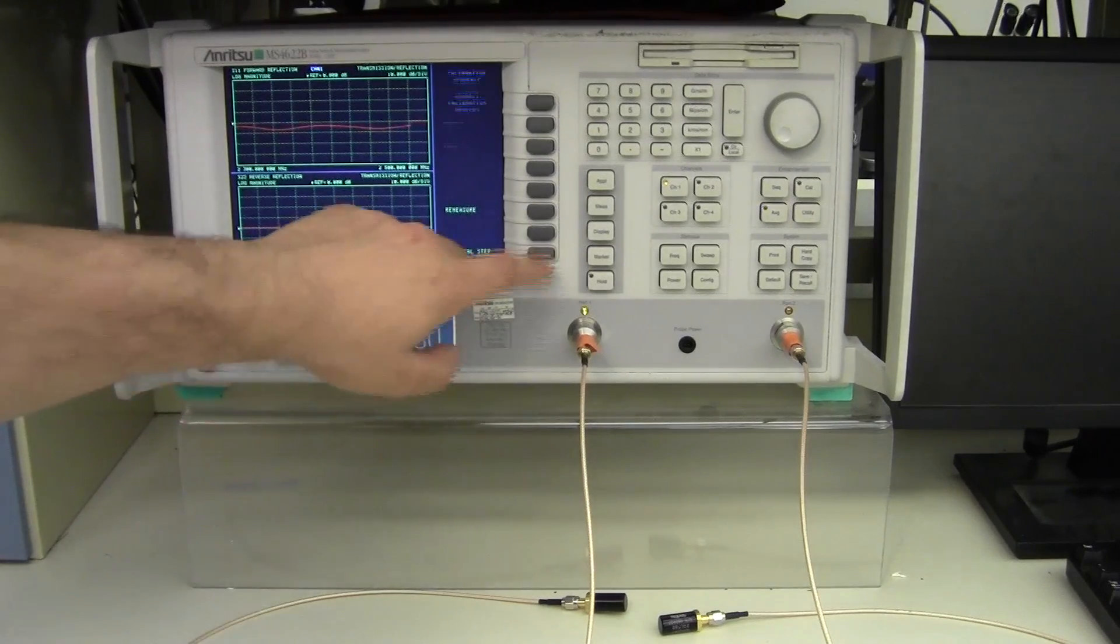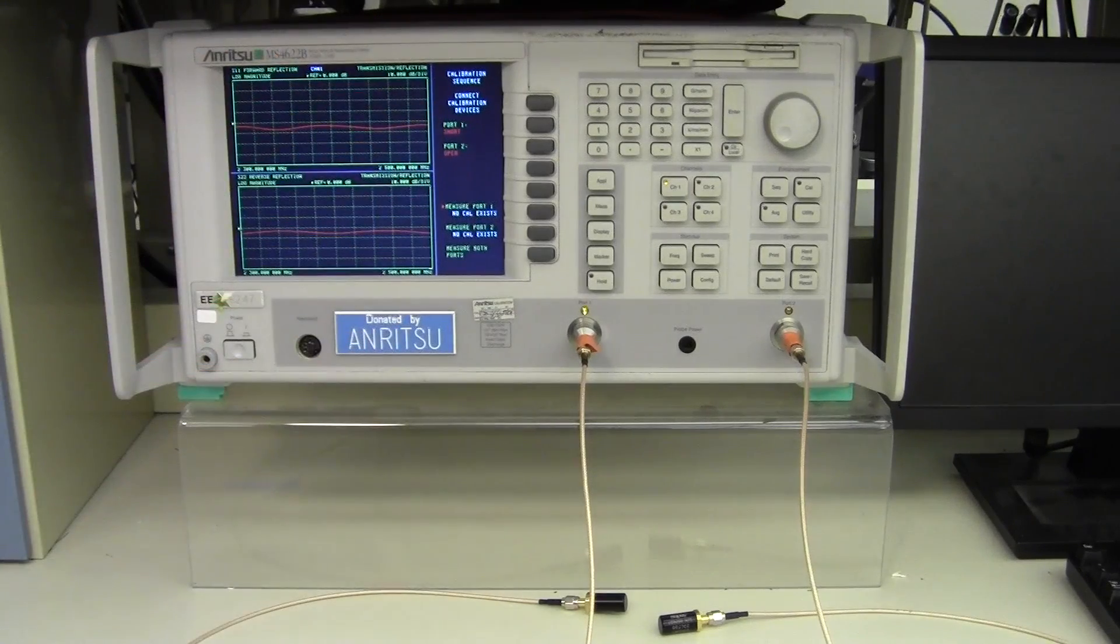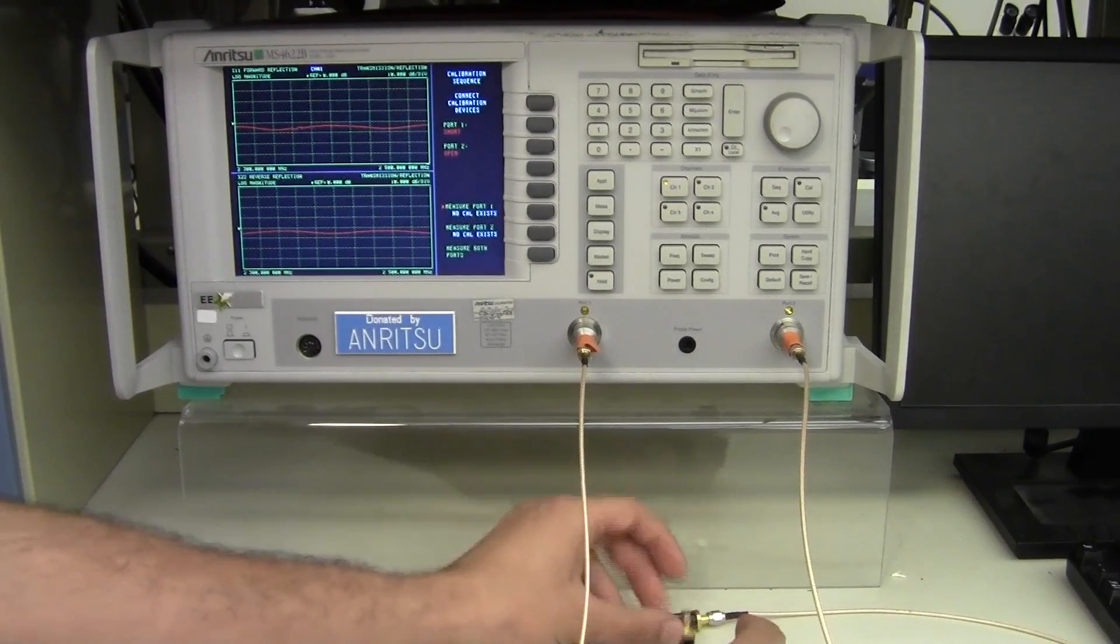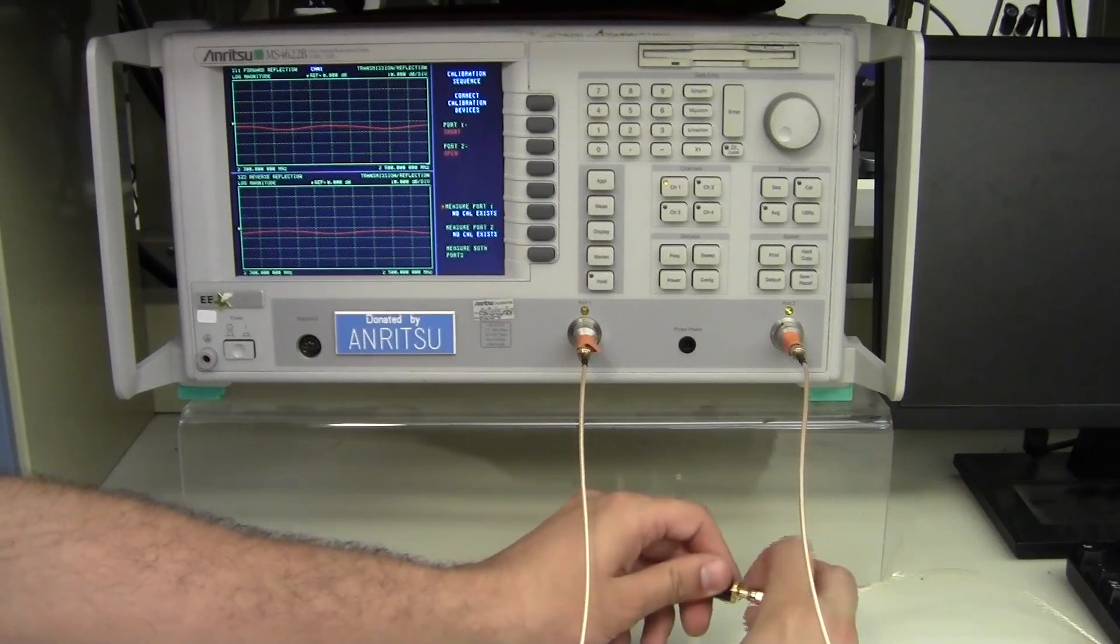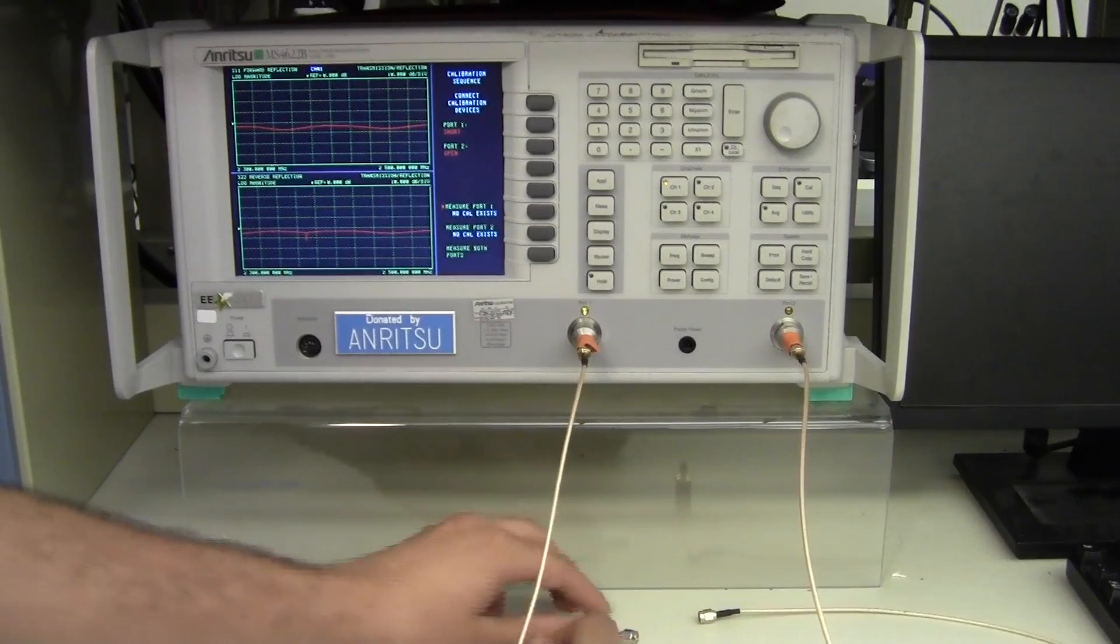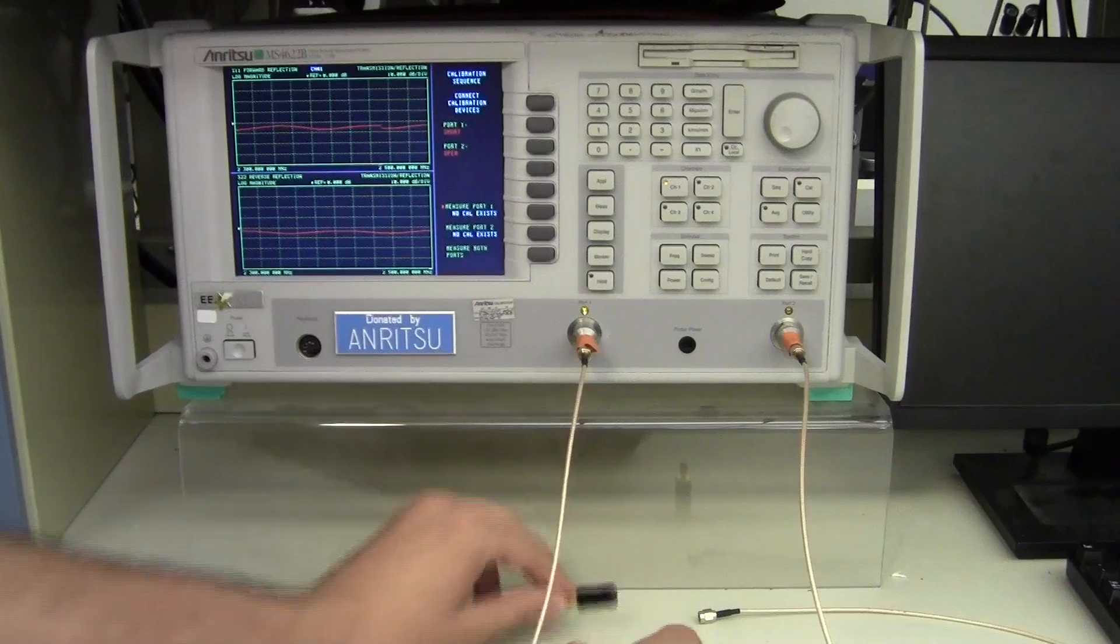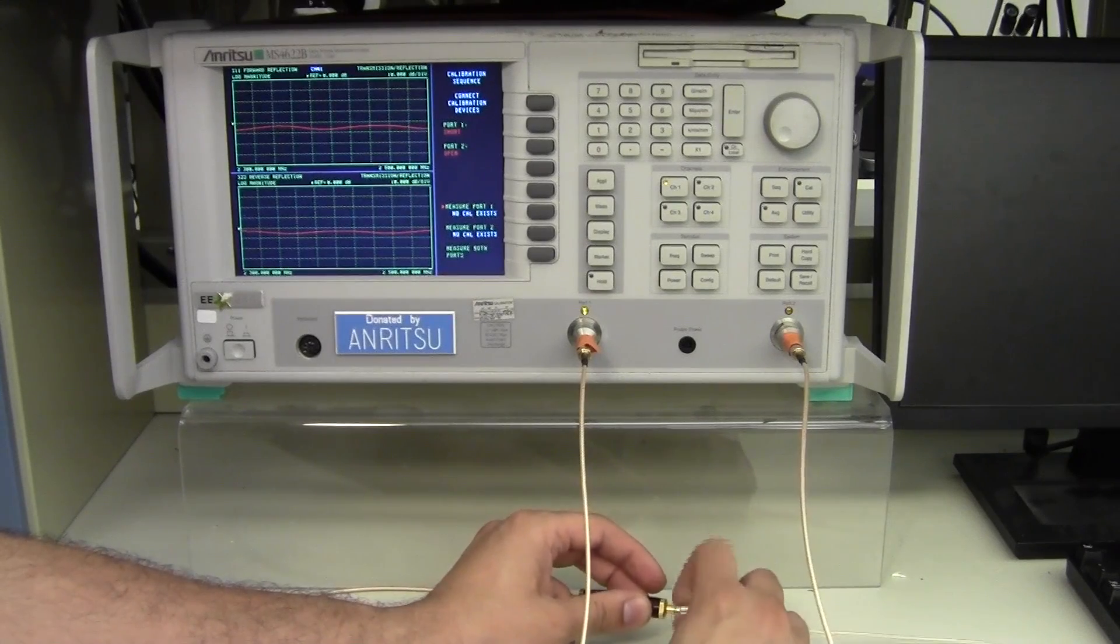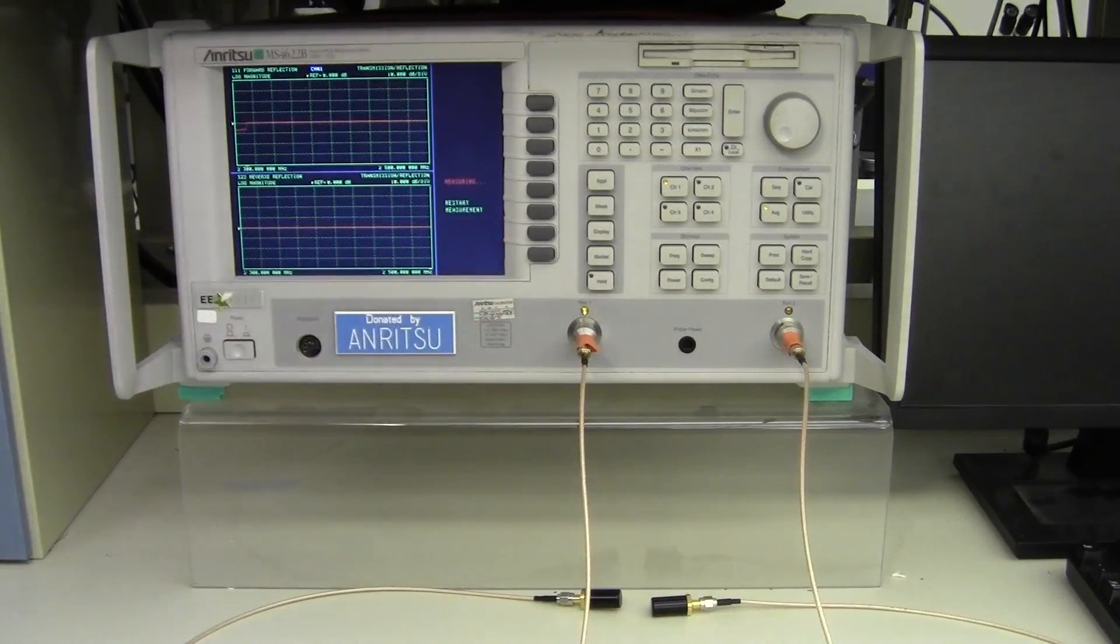Once completed, we go to the next cal step and it asks for the reverse, short and then open. It's asking for them staggered like this since we originally asked for a mixed termination. If we had asked for a match termination at the beginning, it would have asked us for two opens and then two shorts. But our calibration kit comes with one of each, and so we instead opted for the lower cost mixed calibration.